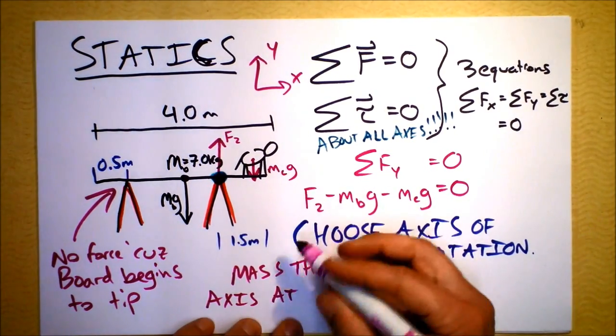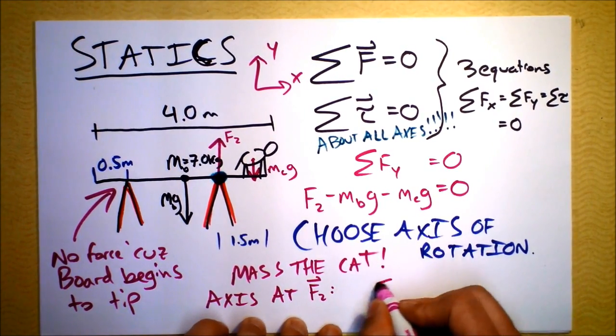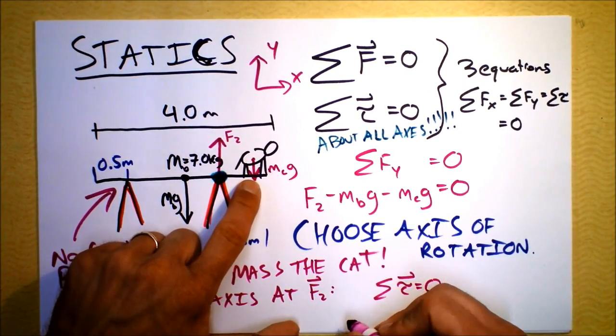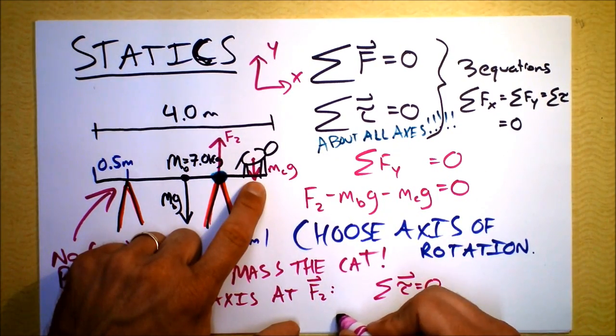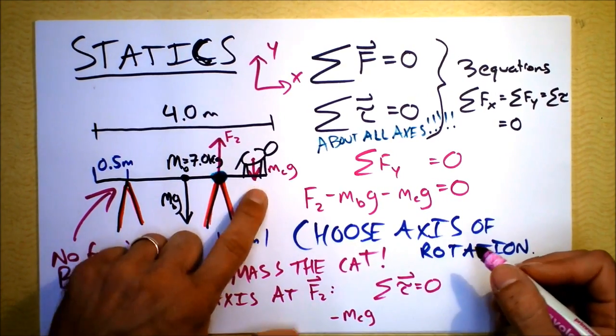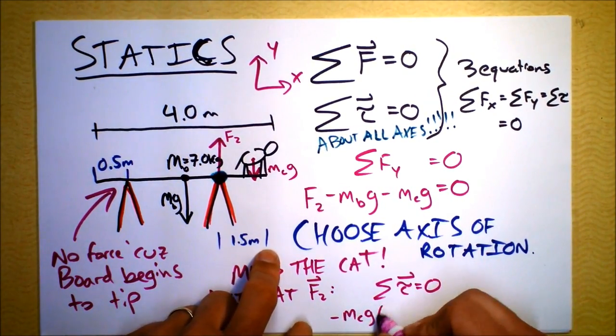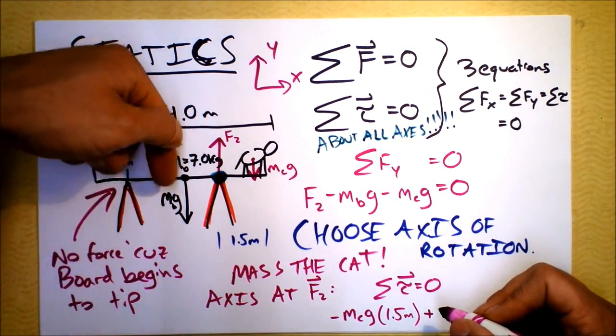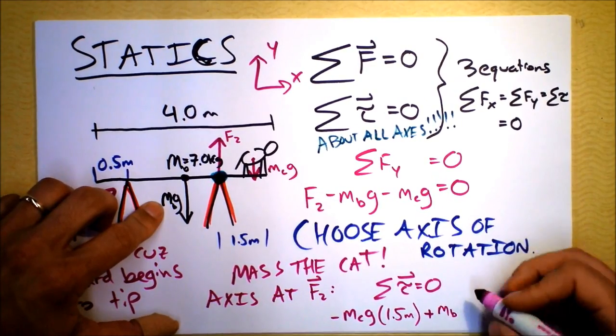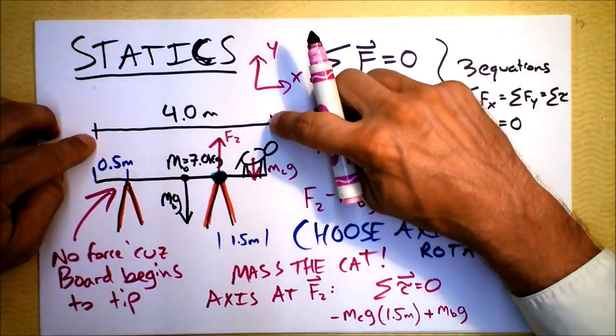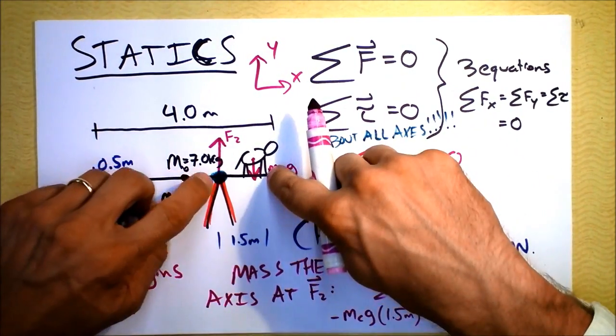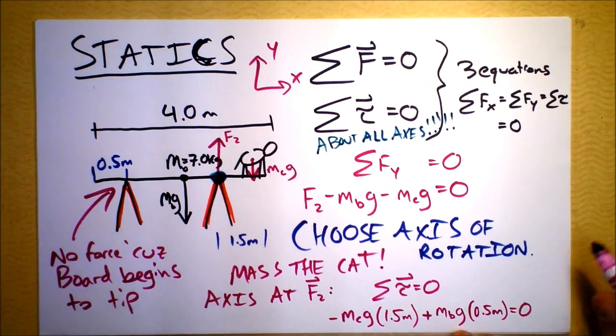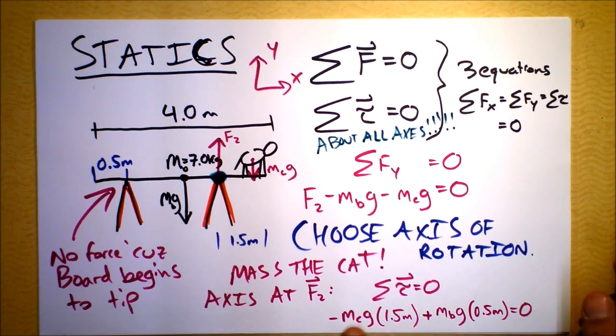Our statement that the net torque equals zero says: here's a torque - that's a clockwise torque, so that's negative. We've got negative mass of the cat times G, that's the force, and it acts 1.5 meters away. Then I'm going to add this, which is causing a counterclockwise rotation - the mass of the board times G. How far away is that? We've got a four meter long board, this is choked up 1.5 meters, so this is two meters, acting at 0.5 meters away. This is all the torques that we experience, and that equals zero.